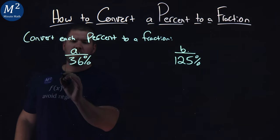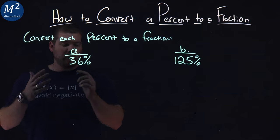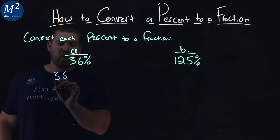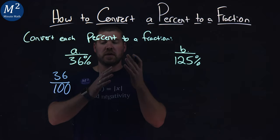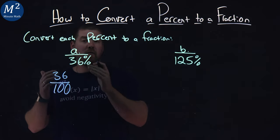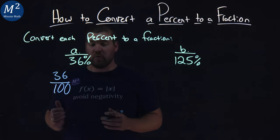So to first do this, we write the 36 percent as a fraction by saying 36 over 100. It's a pretty easy one to do. Whenever you have a percent, you write that number over 100, and you have your fraction form.